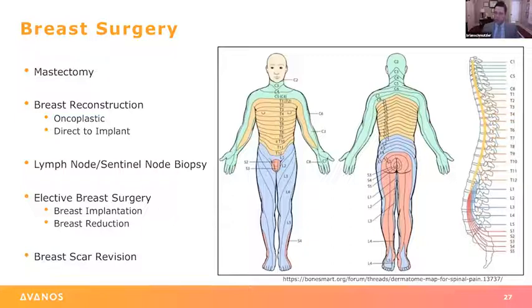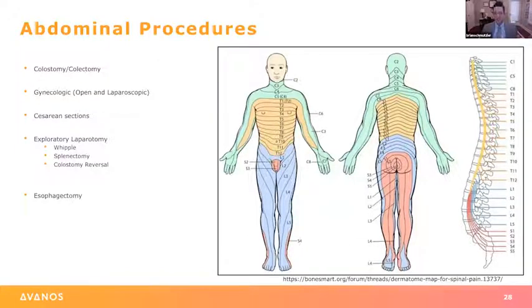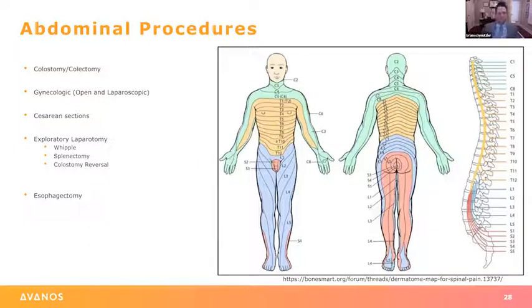We then moved on to abdominal procedures. As mentioned, we went through that progression of TAPs, quadratus lumborum blocks, and then to ESPs. We use these for essentially all of our abdominal procedures — occasionally laparoscopic gynecological procedures and some laparoscopic cholecystectomies in patients with chronic pain issues. We do colectomies, colostomies, gynecological procedures, C-sections, big laparotomies, Whipple procedures, splenectomies. We've gone away completely from epidurals. Esophagectomies are nice because you can catch both the abdominal and the thoracic region. Nephrectomies have been great — we were doing quadratus lumborum blocks but they get in the way; now we do ESP catheters preoperatively and patients do really well.